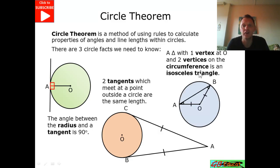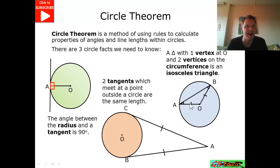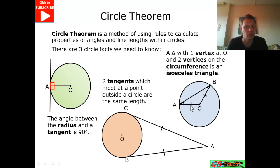The final fact is that if we've got a triangle inside our circle, formed by two radii which have joined up to form a triangle, this is going to be an isosceles triangle. Both side lengths are going to be equal because they're both radii, and the angles at A and B are going to be equal.